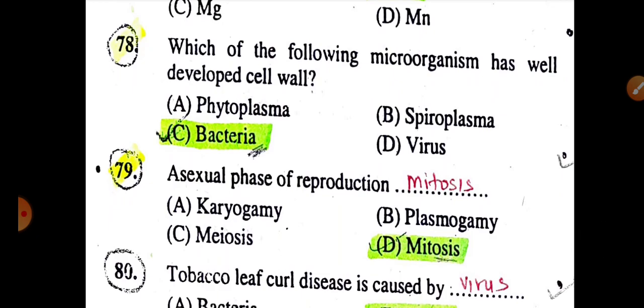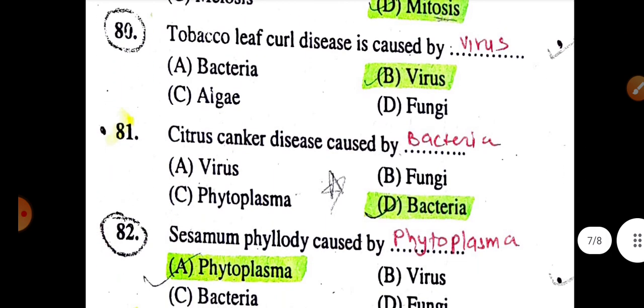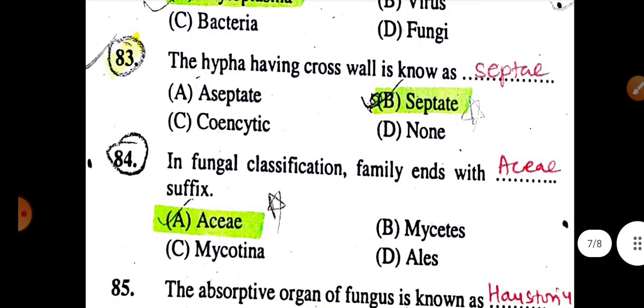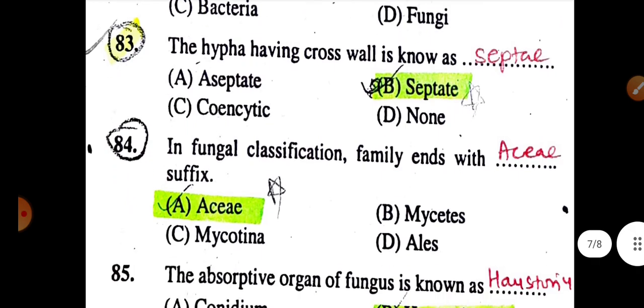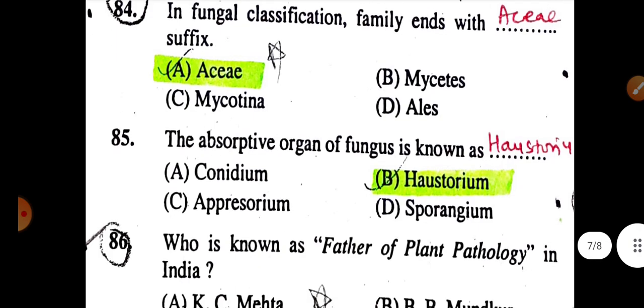The asexual stage of fungi is known as anamorph. Chlorosis of groundnut is caused due to deficiency of iron. Which of the following microorganisms has a well-developed cell wall? Answer: Bacteria. The asexual phase of reproduction is mitosis. Tobacco Leaf Curl disease is caused by virus. Citrus Canker disease is caused by bacteria. Sandal Spike disease is caused by phytoplasma. Hyphae having cross-walls are called septate. In fungal classification, family ends with the suffix '-aceae'.